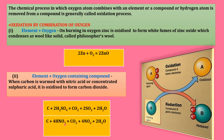Next, carbon reacts with another oxygen-containing compound, nitric acid HNO₃. CO₂ (carbon dioxide), NO₂ (nitrogen dioxide), and H₂O (water) are formed. Here also, oxidation occurs from carbon to carbon dioxide — oxygen combines with the element carbon to form carbon dioxide. When carbon is warmed with concentrated nitric acid or concentrated sulfuric acid, it is oxidized to form carbon dioxide.